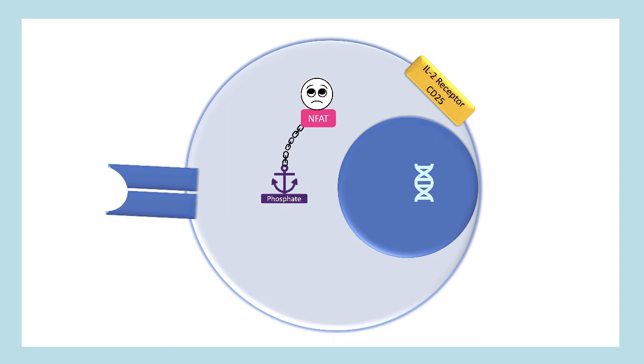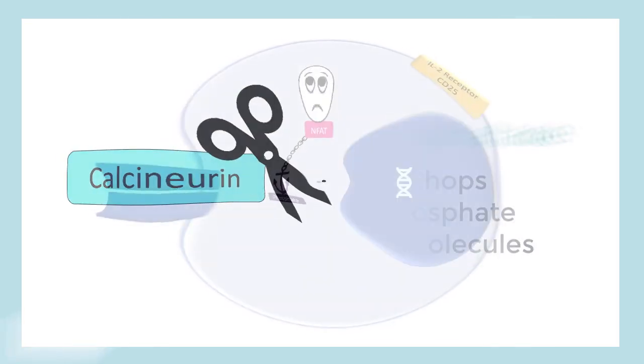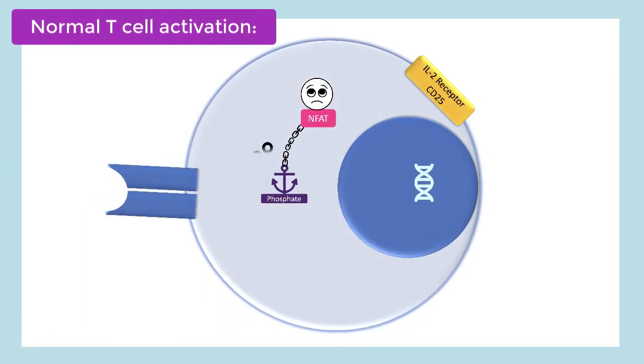And this is where calcineurin comes in. Calcineurin is a serine-threonine phosphatase, which basically means that it's an enzyme in the business of removing phosphate from other molecules. So calcineurin can come along, chop the phosphate off the NFAT and set NFAT free.